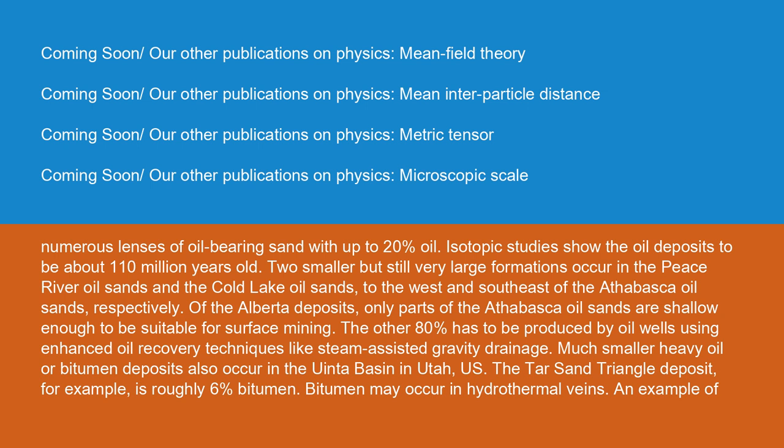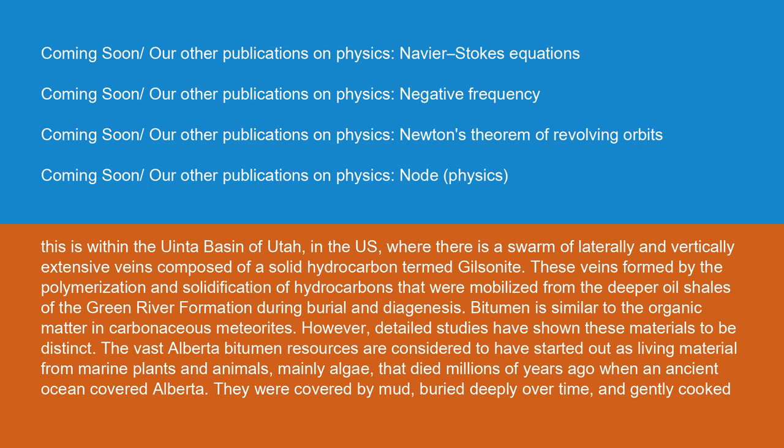Much smaller heavy oil or bitumen deposits also occur in the Uinta Basin in Utah, U.S. The Tar Sand Triangle deposit, for example, is roughly 6% bitumen. Bitumen may occur in hydrothermal veins. An example of this is within the Uinta Basin of Utah, where there is a swarm of laterally and vertically extensive veins composed of a solid hydrocarbon termed gilsonite. These veins formed by the polymerization and solidification of hydrocarbons that were mobilized from the deeper oil shales of the Green River formation during burial and diagenesis.